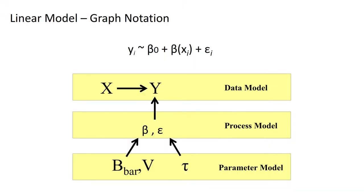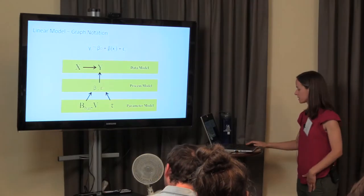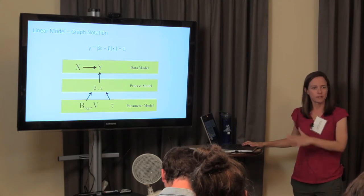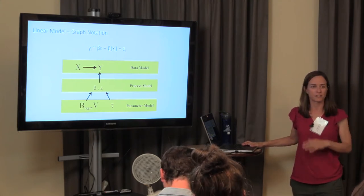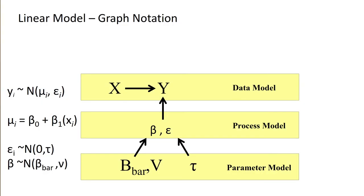Another way to write this is in graph notation. We have our linear model at the top. What we're really saying is that we have a data model for how y is assumed to be sampled, a process model with parameters, and then parameter models. Because we're working in a Bayesian framework, our parameters themselves have models — they're assumed to be drawn from distributions — and we'll use this terminology again and again.